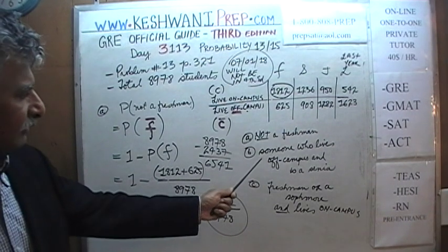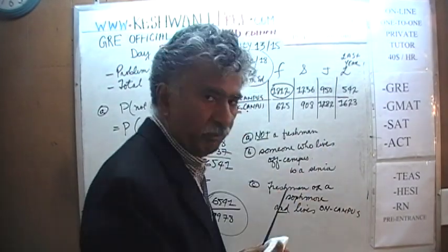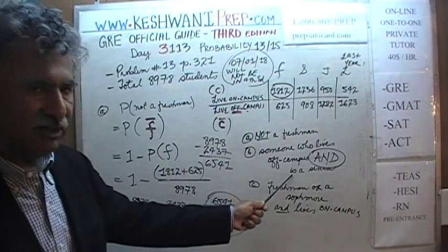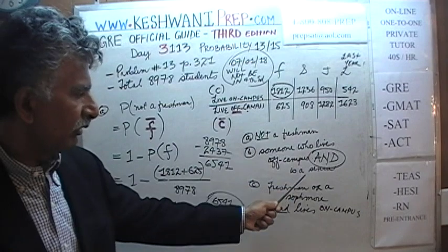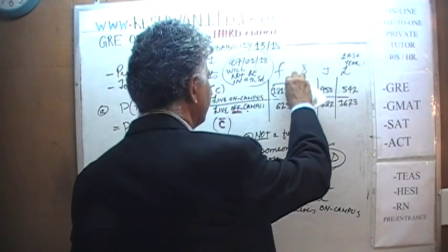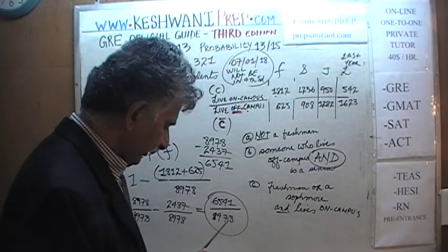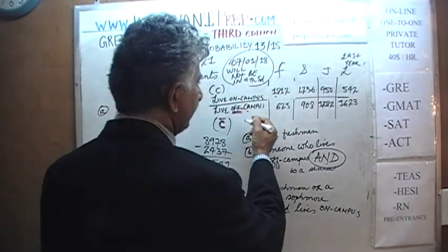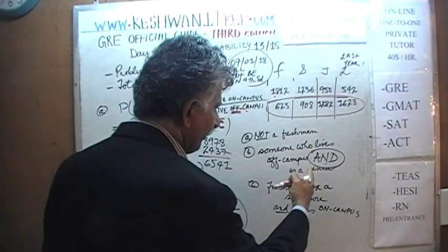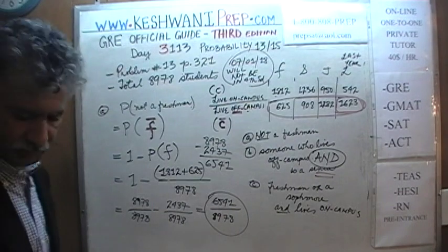Part B is asking us: what are the odds of picking somebody who lives off campus and is a senior? The most important part here is to understand the word 'and.' Someone who lives off campus AND is a senior — not 'or.' The person we are looking for has to possess two qualities: they have to live off campus, and they have to be a senior. That figure is right here: 1,623. That's it — 1,623 out of the whole amount.